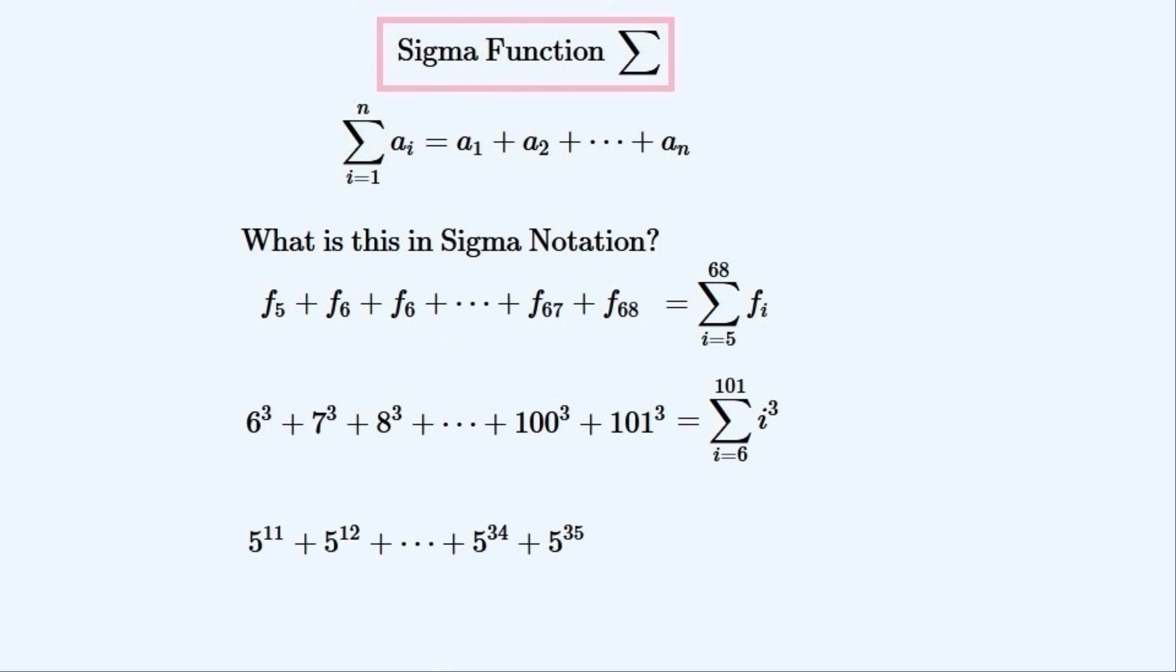And finally what is this dot notation expression in sigma notation? It is this. The sum of all powers of 5 from 11 to 35.